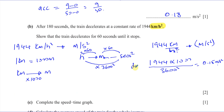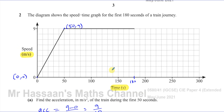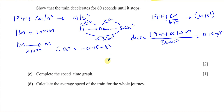This is the deceleration section of the graph. The acceleration is going to be negative 0.15 meters per second squared, because deceleration is negative acceleration. So if the deceleration is 0.15 — meaning it's slowing down — the acceleration is negative 0.15 meters per second squared. We know that the train is going at 9 meters per second at 180 seconds. The deceleration is 0.15, and we want to find how long it takes to come to rest.